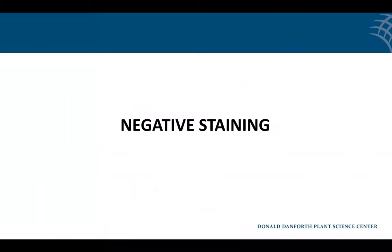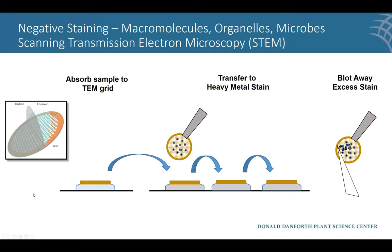Another technique that can be used on an SEM is called negative staining. This is actually one of the easiest techniques — if I were to pick anything to teach a new user on an SEM, it would be negative staining if you have a STEM detector. Normally we use grids about three millimeters in diameter with a thin electron-transparent polymer coating called Formvar — basically a plastic — with a thin carbon layer on top for stability. You place these grids on parafilm or dental wax, put a drop of whatever you want to absorb — commonly macromolecules, organelles, or microbes like viruses — and let it absorb for a few seconds to minutes.